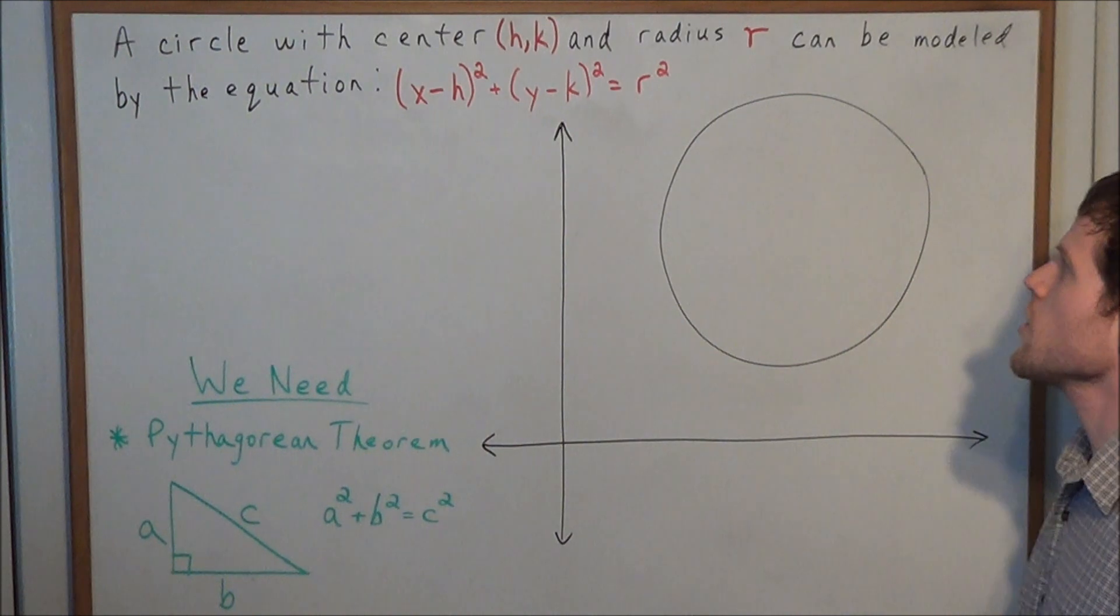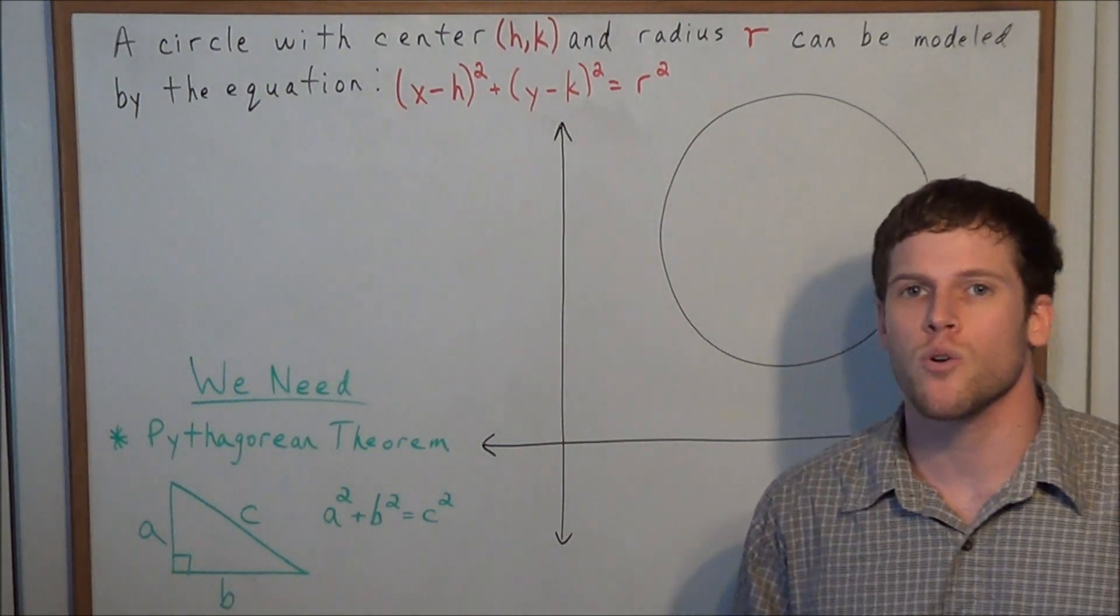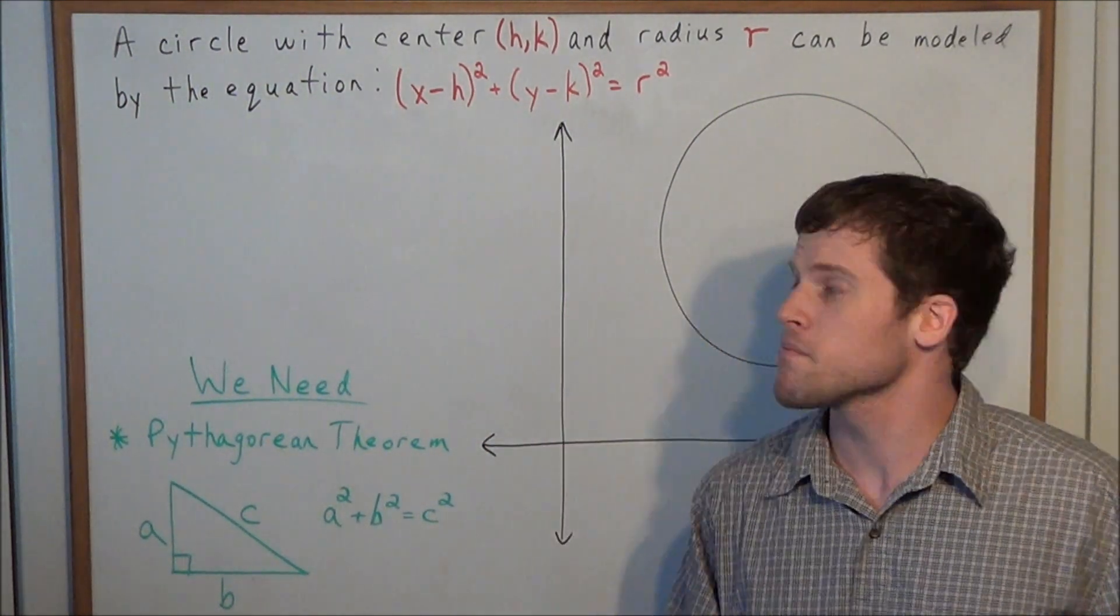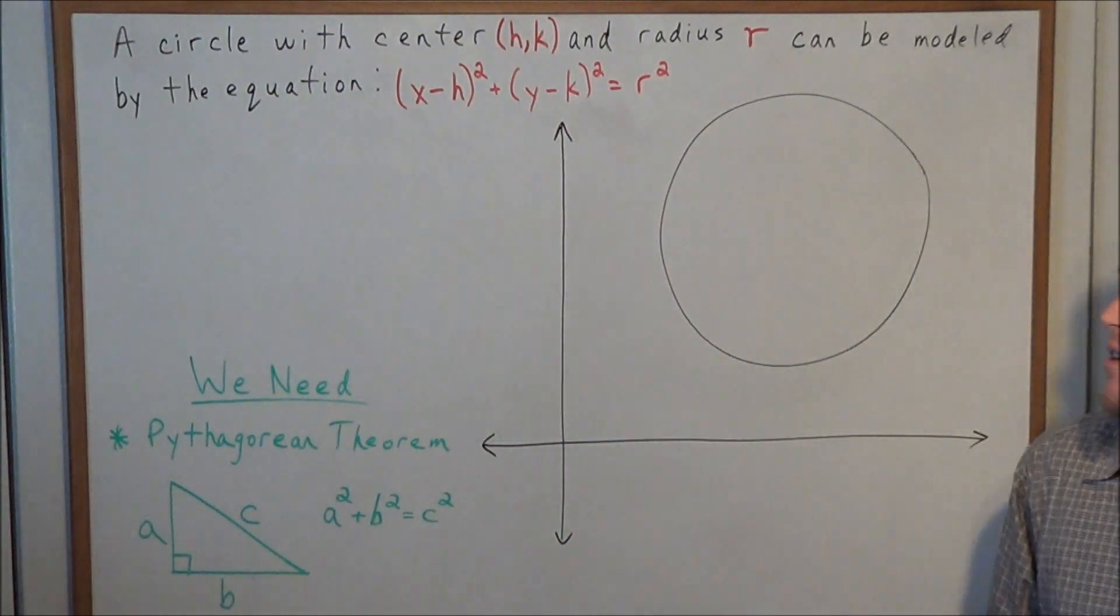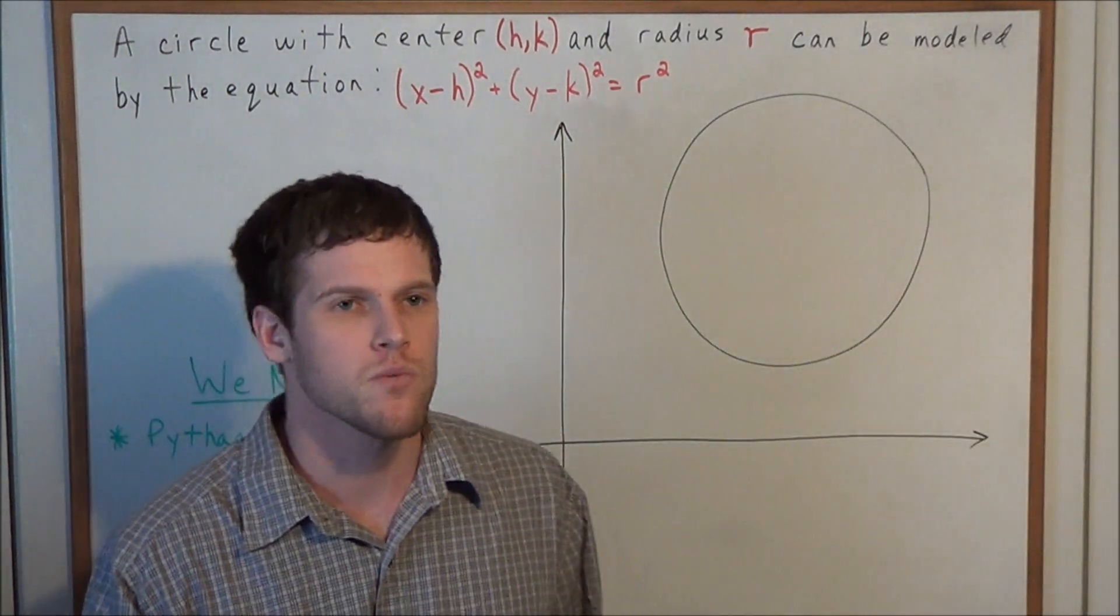We have a circle with center (h,k) and radius r. It can be modeled by the equation (x-h)² + (y-k)² = r². And today I want to explain why that equation works.